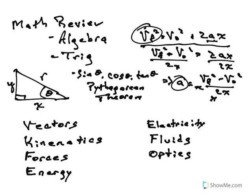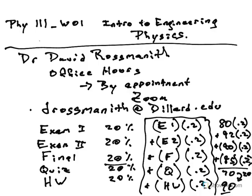That's pretty much all I have for you. My email is drossmanith@dillard.edu. I also have my cell phone and everything on the syllabus, which should be posted to Canvas. Everything will be posted on Canvas, and when I do post things I'll generally send an email to let you know. But keep checking Canvas at least once a day to make sure I didn't post a quiz or a new assignment. If you're having troubles, email me and let me know — I'll be happy to work with you as much as possible. I look forward to the rest of the semester.